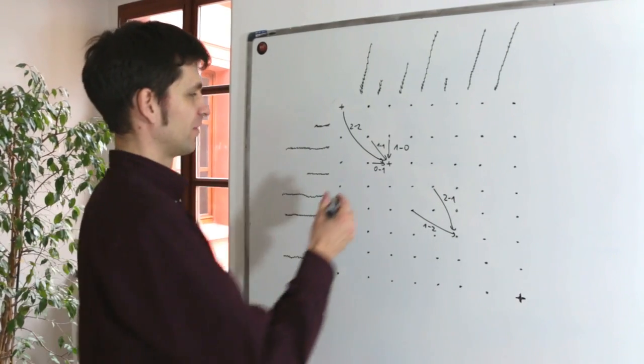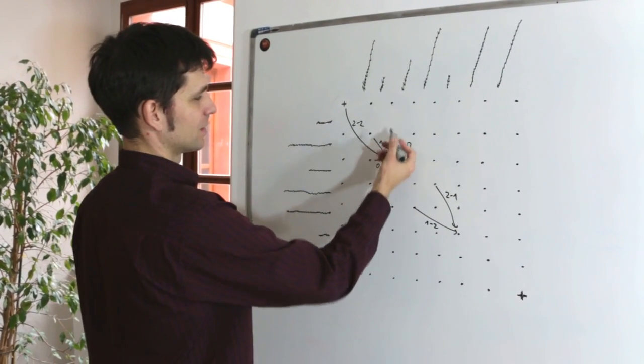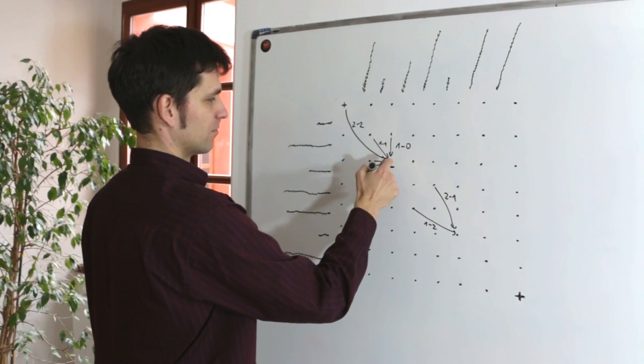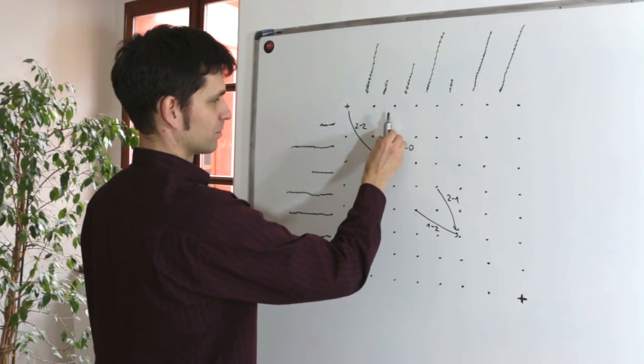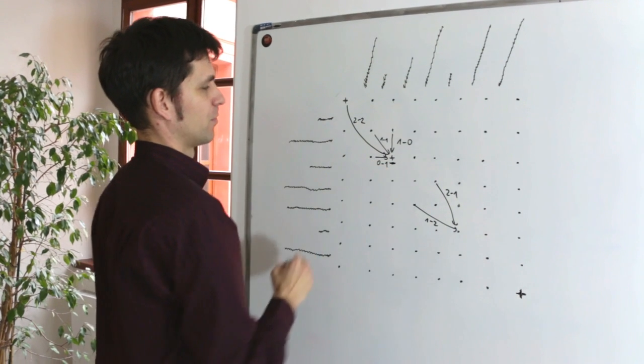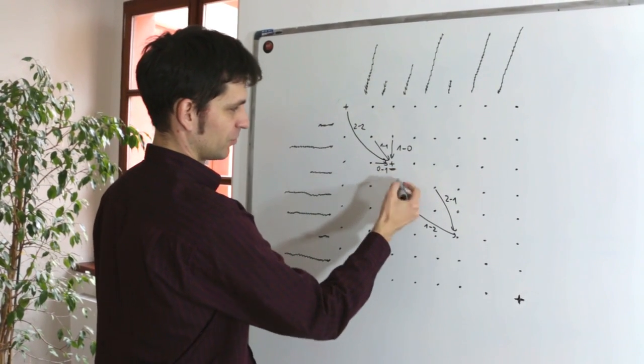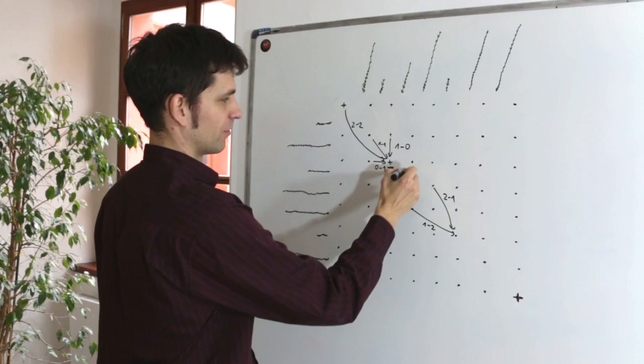So when filling the value for this cell we consider all the six allowed moves and write down here what is the cheapest score of those six possible ways how to get to this point. And then this cell serves as the input point for other traverses.